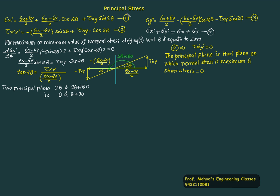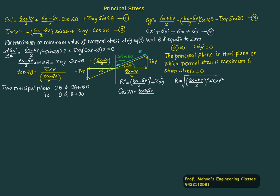Now we develop the equation for principal stress. We substitute cos 2 theta and sin 2 theta from the triangle. Let R be the hypotenuse. Applying Pythagoras: R squared equals sigma x minus sigma y by 2, whole square, plus tau x y squared. So R equals the square root of sigma x minus sigma y by 2, whole square, plus tau x y squared. Then cos 2 theta equals sigma x minus sigma y by 2 divided by R, and sin 2 theta equals tau x y divided by R.